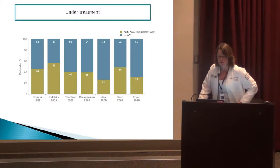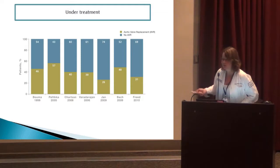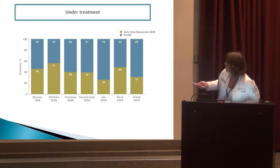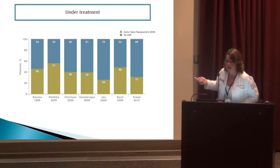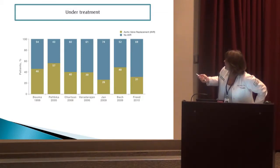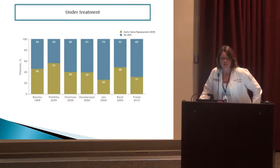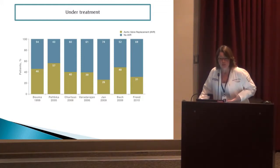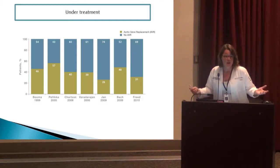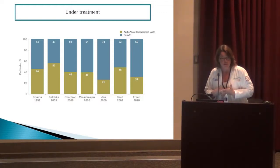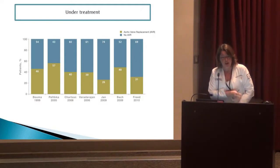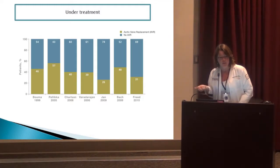Under treatment, there was a lot of discussion about patients with severe aortic stenosis not receiving treatment. In blue are patients who had no AVR — surgical aortic valve replacement — and they fared very poorly. They found that some patients were felt to be too old, or physicians didn't know about the correct treatments. Even as TAVR emerged, some physicians didn't realize there was an alternative to surgical aortic valve replacement.